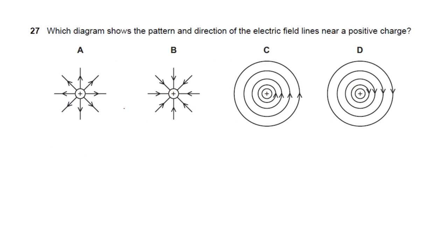Question 27: which diagram shows the electric field lines near a positive charge? Electric field lines go outward from a positive charge in all directions. Answer: A.